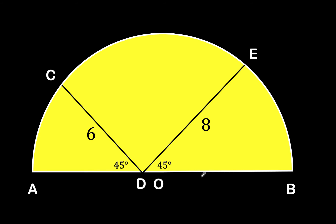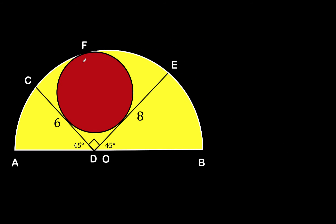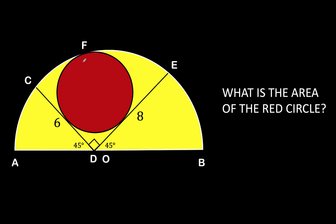Since we have here a straight angle and the measure of these two angles are both 45 degrees, it implies that the measure of angle CDE must be 90 degrees. Then let's draw this red circle that is tangent to the two line segments and to the semicircle itself. We would like to find the area of this red circle. You can pause the video and see if you can solve this beautiful geometry problem.